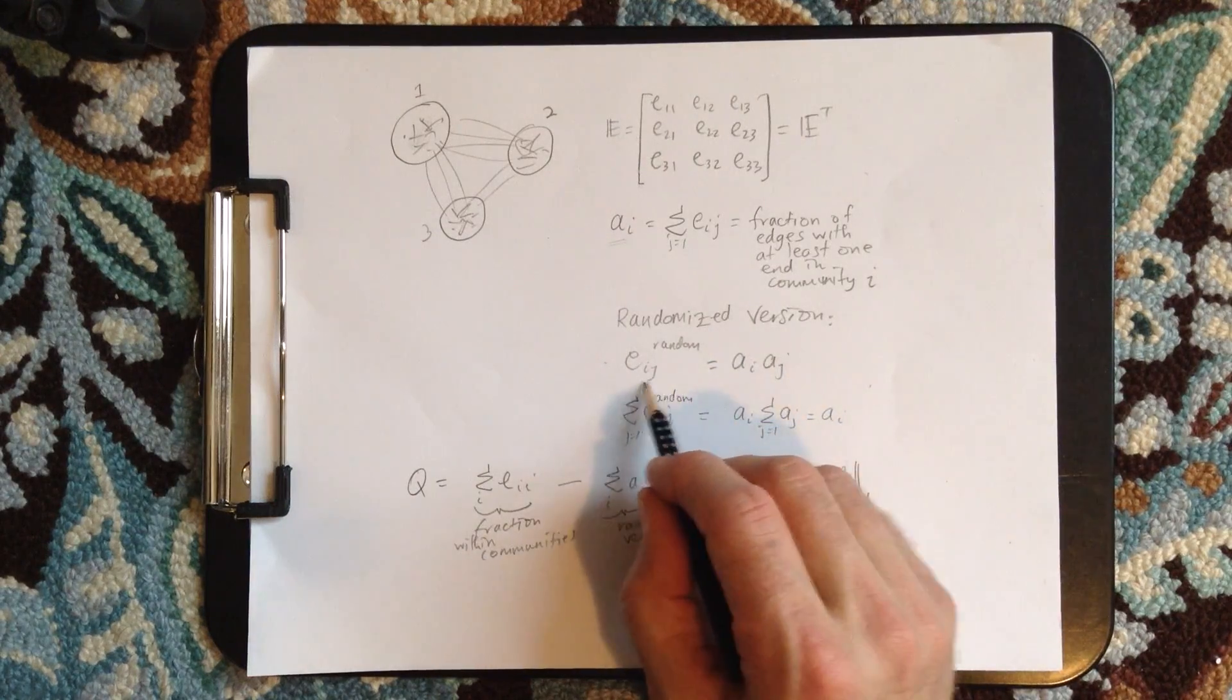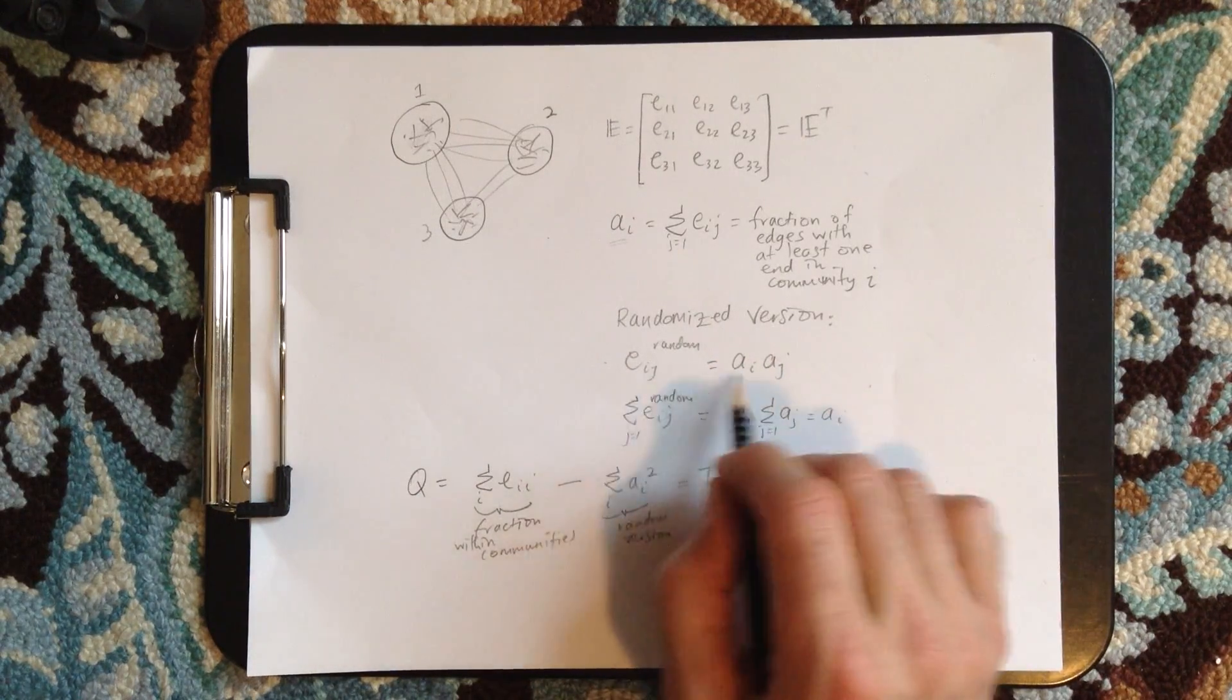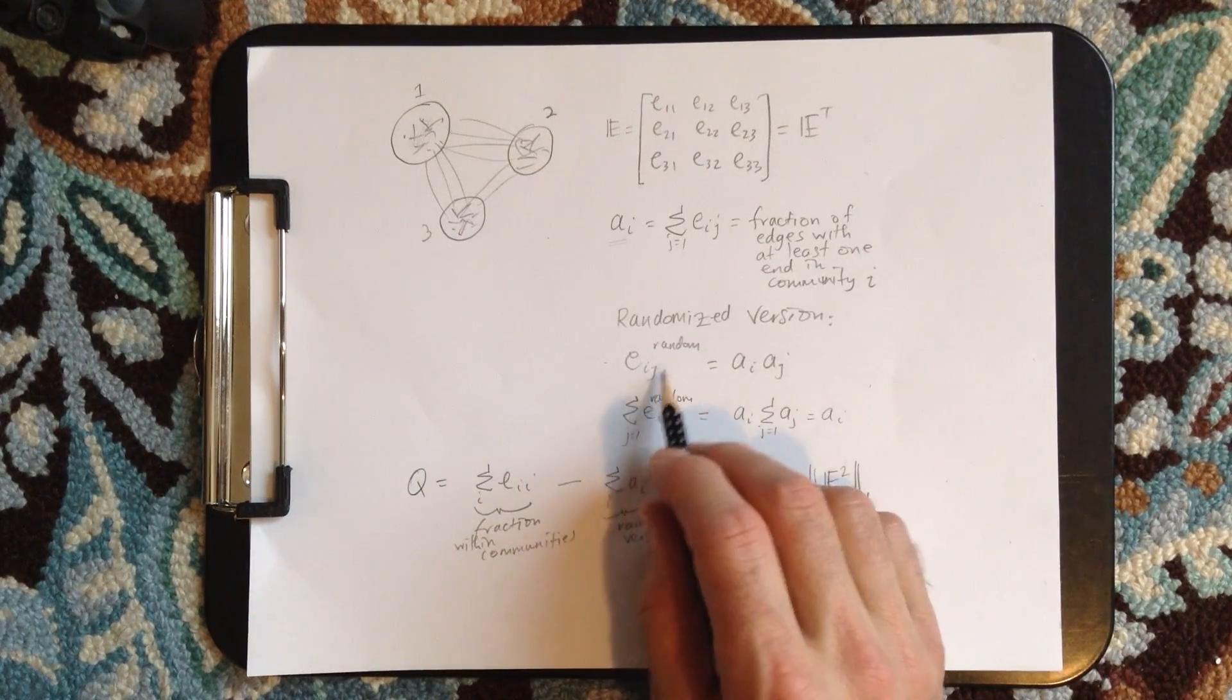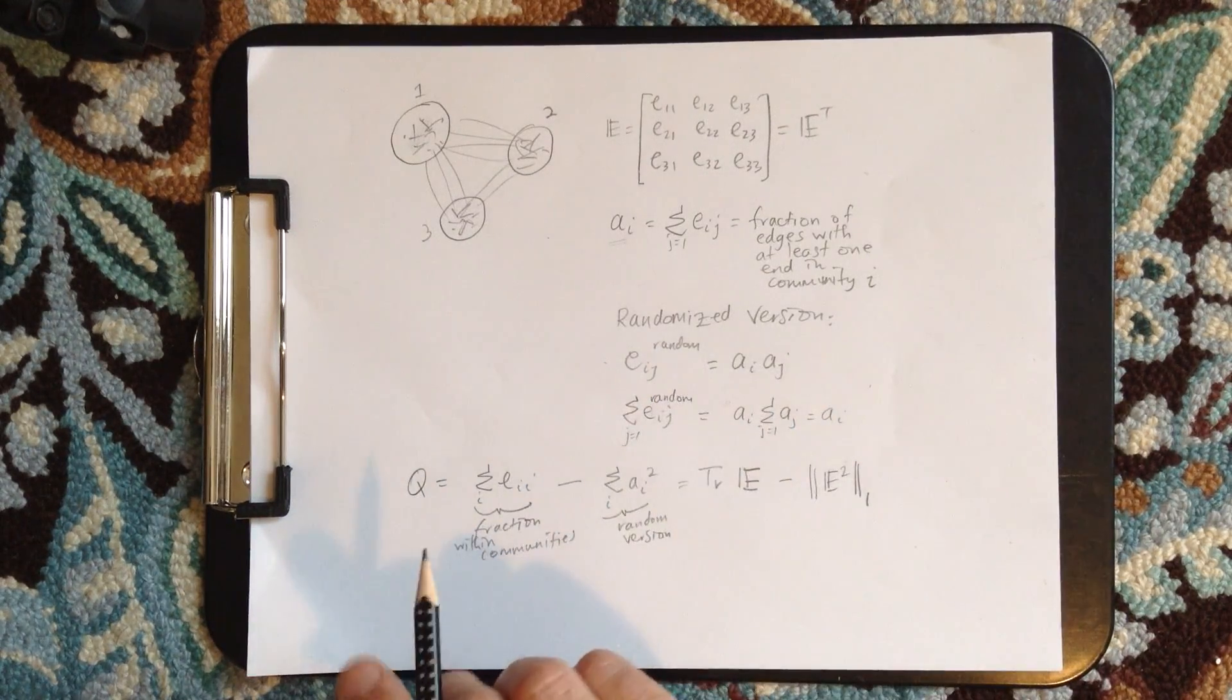So the randomized version, then we'll build it. We can, or we can at least write down how the edges would be distributed. So EIJ random is now going to be AI times AJ.